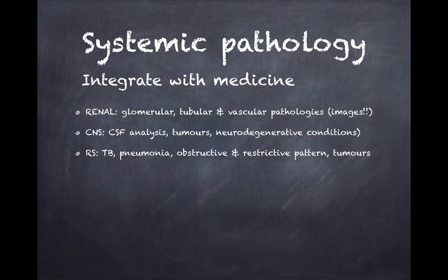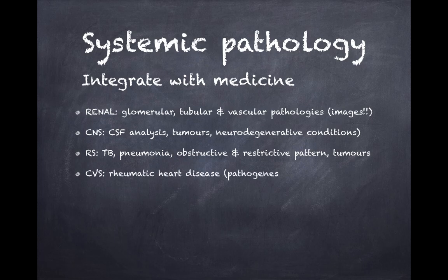For pneumonias, since the content is the same as in medicine, integrating them cuts down study time. Make a table listing the organism, clinical symptoms, X-ray findings, and drug of choice — revision can be done within 10 minutes this way. For CVS in pathology, the most important topic is rheumatic heart disease; medicine covers many more topics, but in pathology this is the key one.